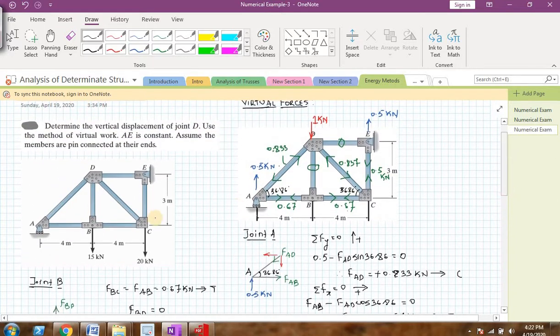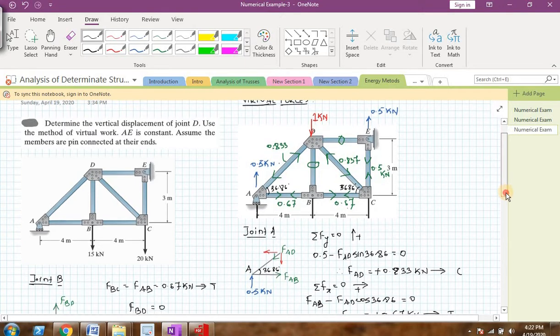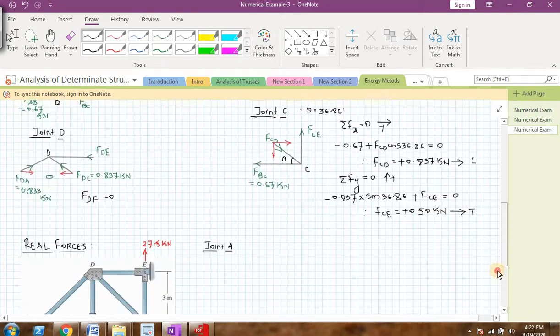What I will do here is I will take up joint A and joint B and try to find the forces in each and every member of the truss, only when I consider joint A and B. Hope you can do the same thing to find the forces in other members of the truss. I have taken the same truss with real loads.